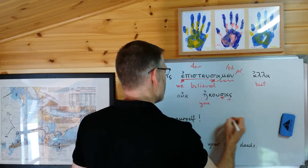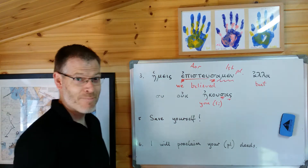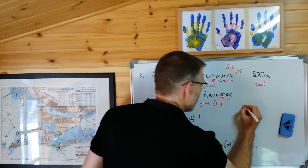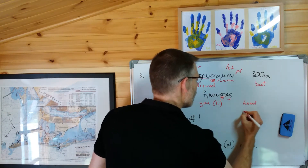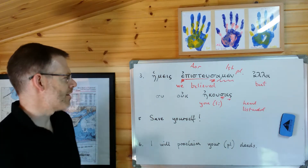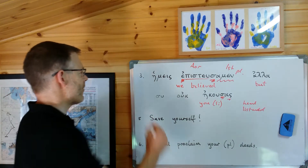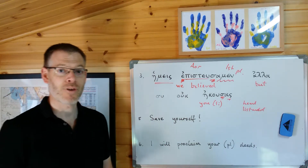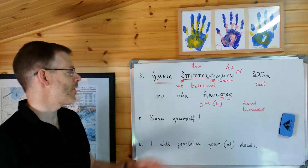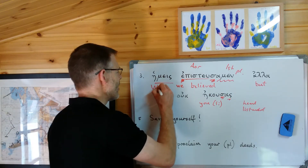So it's you, singular — you heard or listened. Now going from the top to begin with, we've got this first person plural pronoun from ego: eme, emu, emoi, hermes. So it's the nominative plural pronoun, which means 'we.'